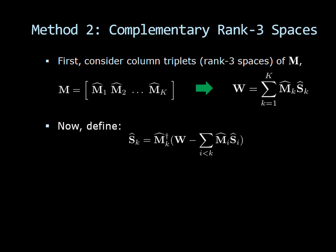We can now define each basis shape as an implicit function of its corresponding column triplet in the residual component of W not yet modeled by the previous triplets. This representation can be shown to reduce the energy of each column of the basis shape as the index K increases.